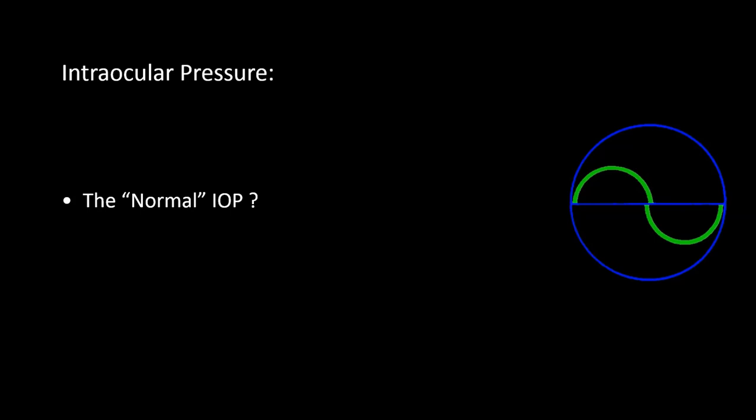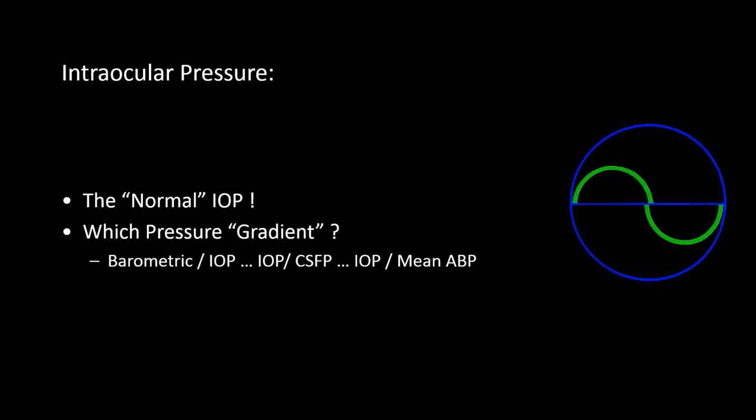We don't know what would be considered normal for any given eye, and we don't know what kind of pressure gradient is causing the damage. Is it the transcorneal pressure gradient between the barometric readings outside and inside the eye? Or is it the translaminar cribrosa pressure gradient between the CSF pressure and the intraocular pressure? Or perhaps the transmural pressure gradient between the mean arterial blood pressure and the intraocular pressure? Or is it a combination of all of the above? Although Goldmann's applanation tonometer is considered the gold standard, it depends on corneal thickness, clarity, and biomechanics we are still trying to understand.